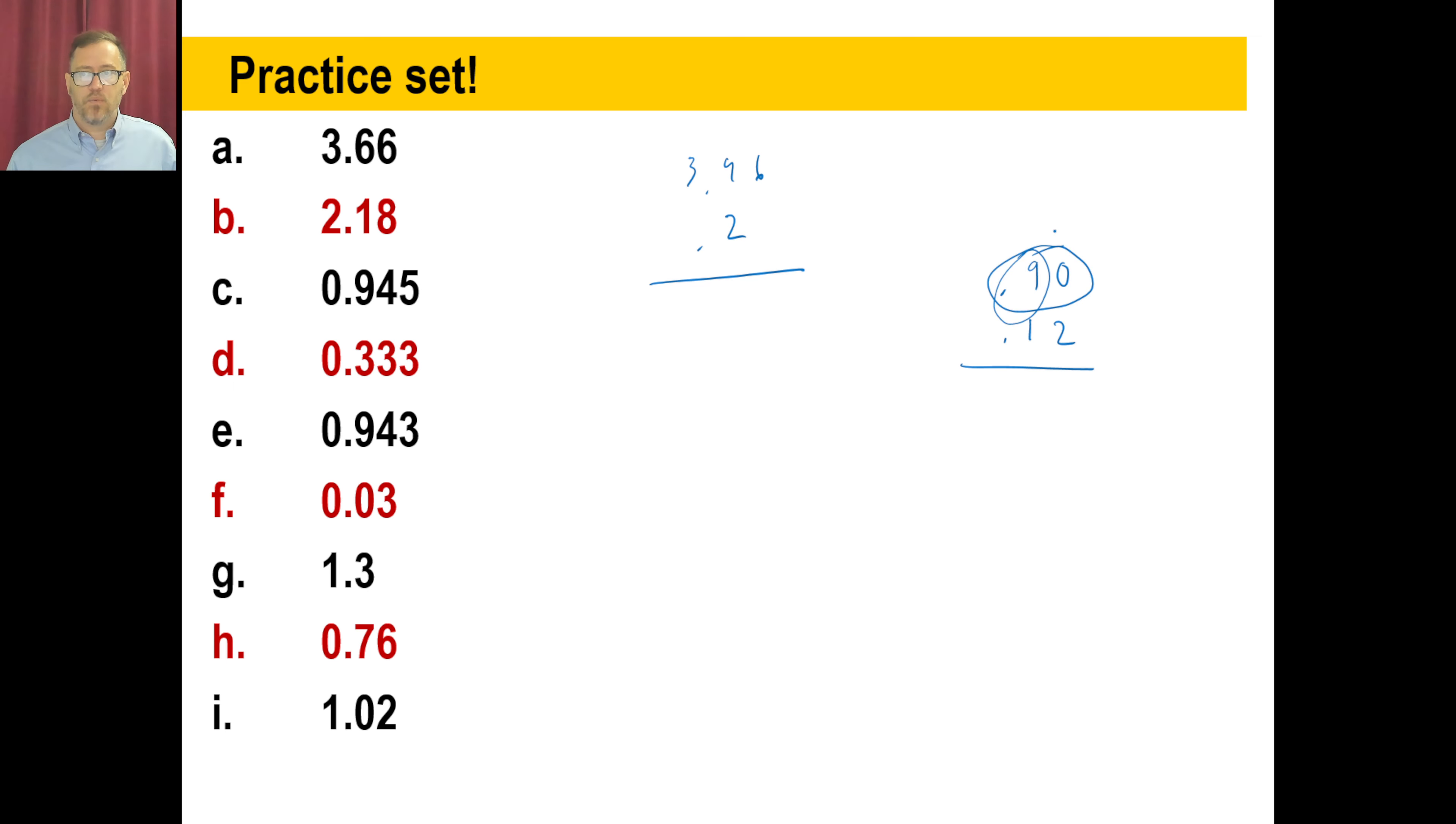Go ahead. 0.9 tenths is the same thing as 90 hundredths, right? Who cares what way you write it? Stick a zero on there. All right. Last one. Pause it and try J.